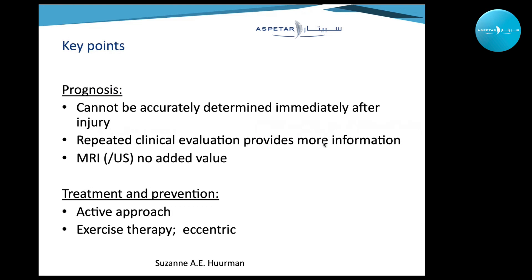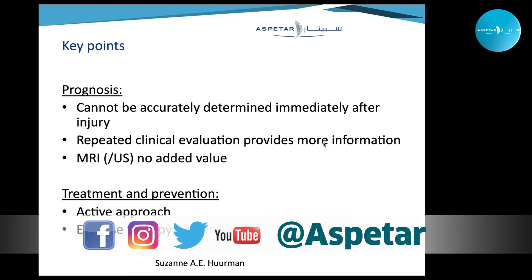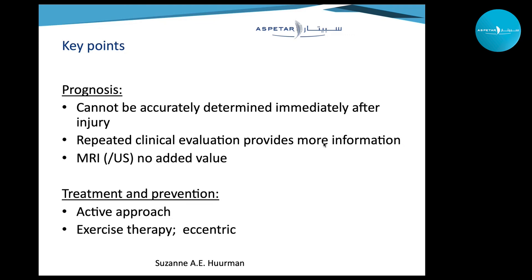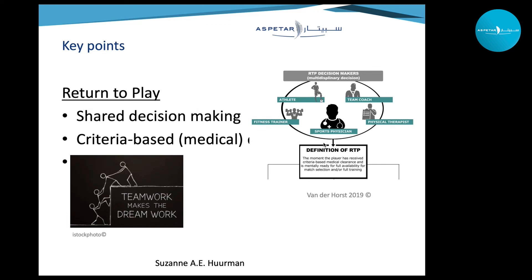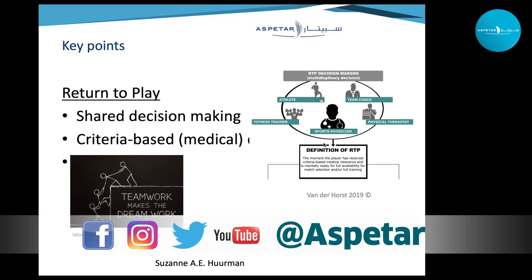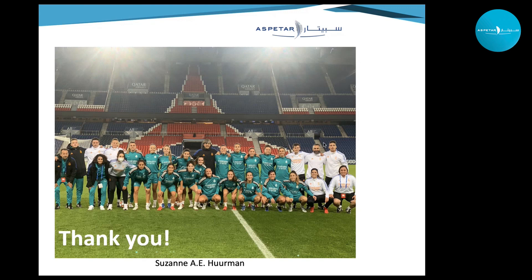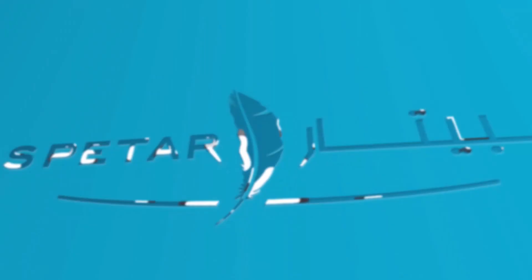Key points: Prognosis cannot be accurately determined immediately after injury; repeated clinical evaluation provides more information, and MRI or ultrasound adds no value. Treatment and prevention require an active approach — start physiotherapy and pain-free training as soon as possible. Return to play depends on shared decision making and criteria-based medical clearance. Thank you.